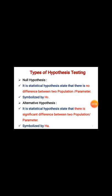Moving further, there are two types of hypothesis: first is the null hypothesis and second is the alternative hypothesis. The null hypothesis is a statistical hypothesis that states there is no difference between two populations or two parameters — that means there is no difference between two mean values.